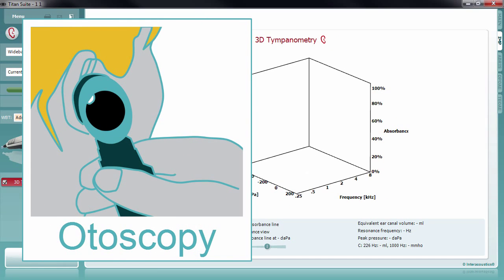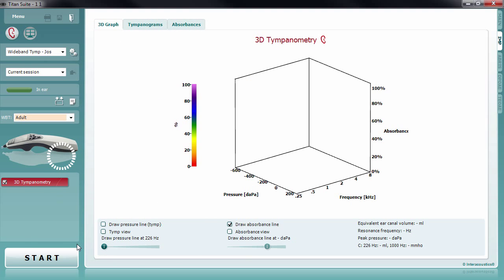After having performed otoscopy, you may insert the probe into the ear. Select an appropriate ear tip that allows inserting the probe while sealing the patient's ear canal.